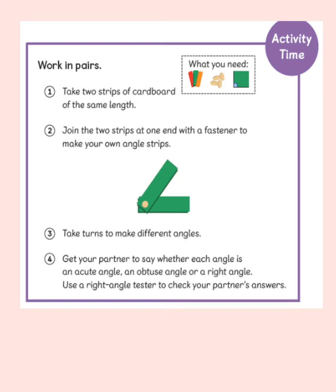Now a competition for you and your parents, pets and partners. For this activity, you'll need a couple of strips of paper or cardboard of the same length, and something to fasten them with — preferably a split pin, but a paper clip or even blue tack would do. You're going to take turns making different angles using your strips of paper, and the other person will need to say whether you've made an acute angle, a right angle, or an obtuse angle.